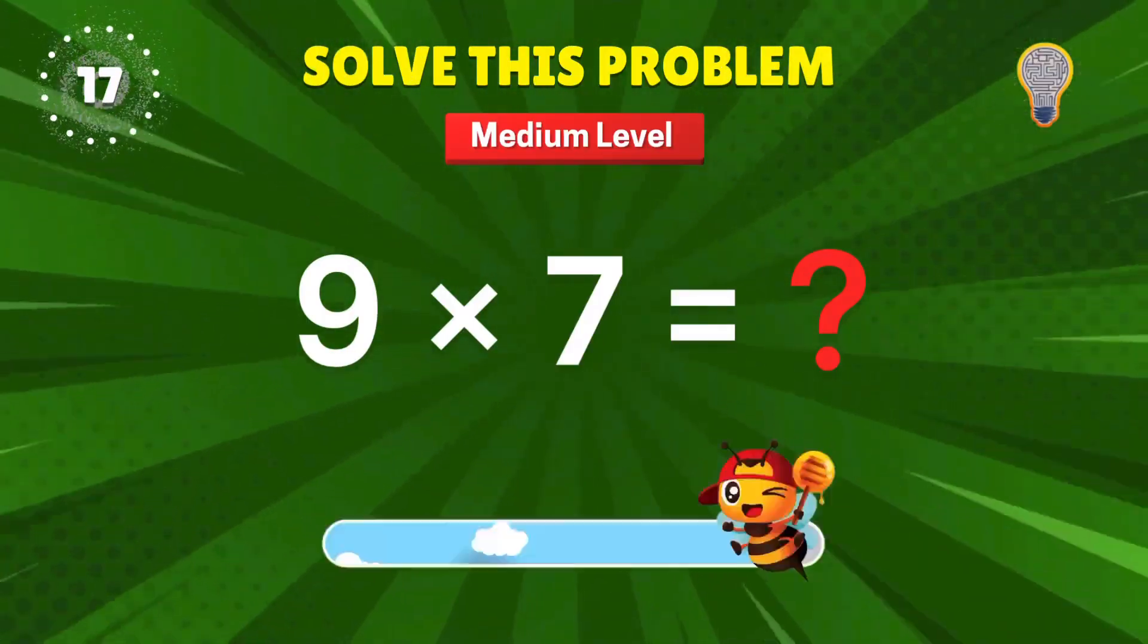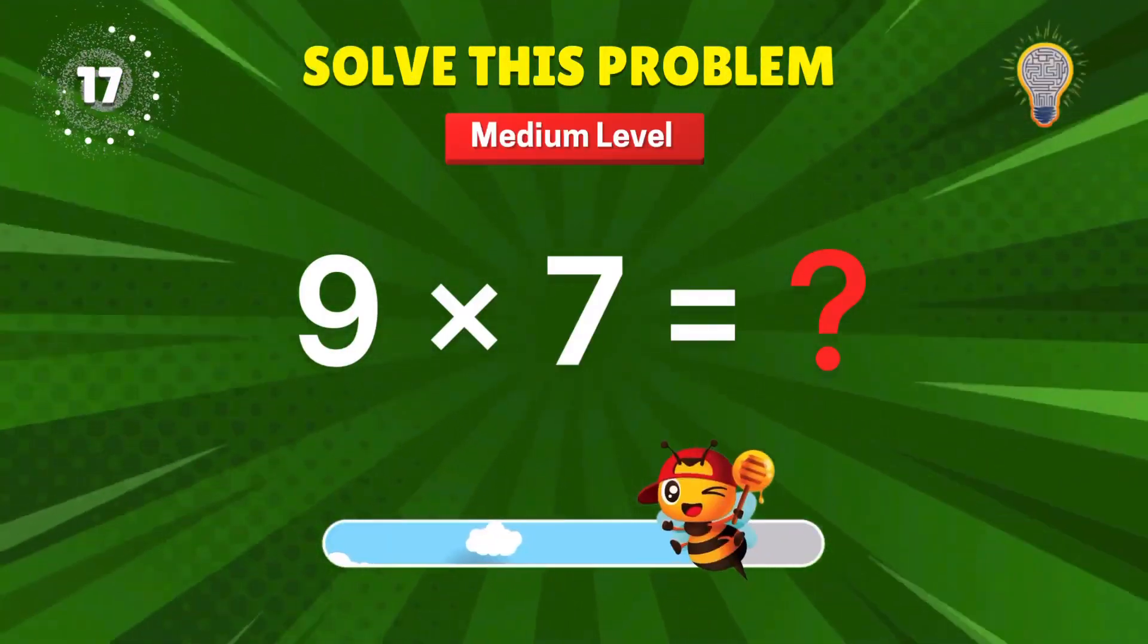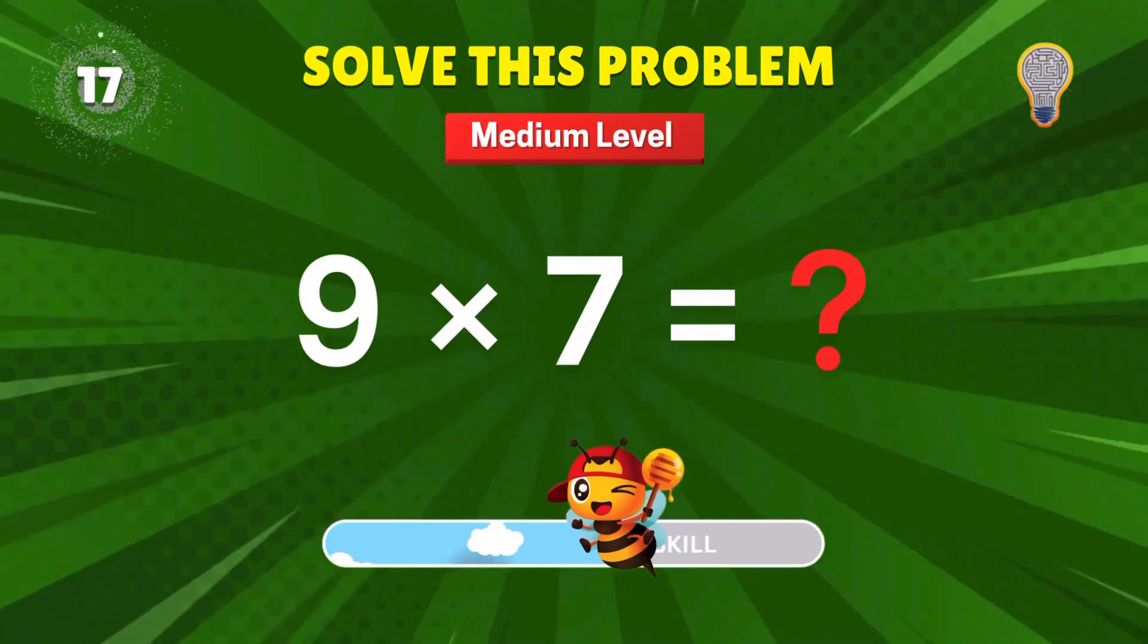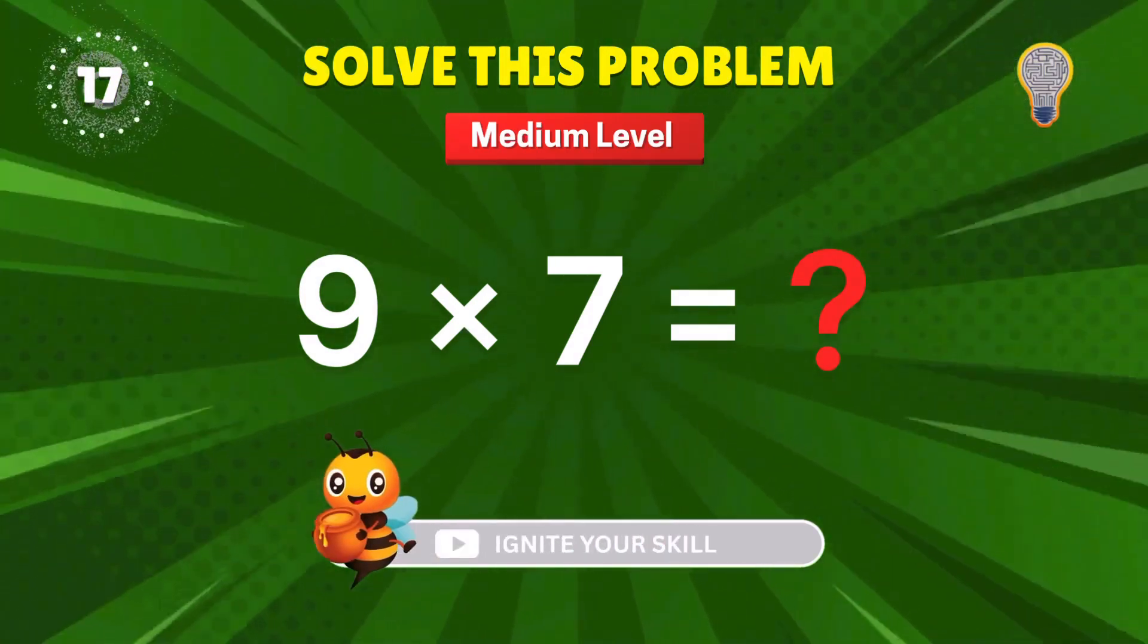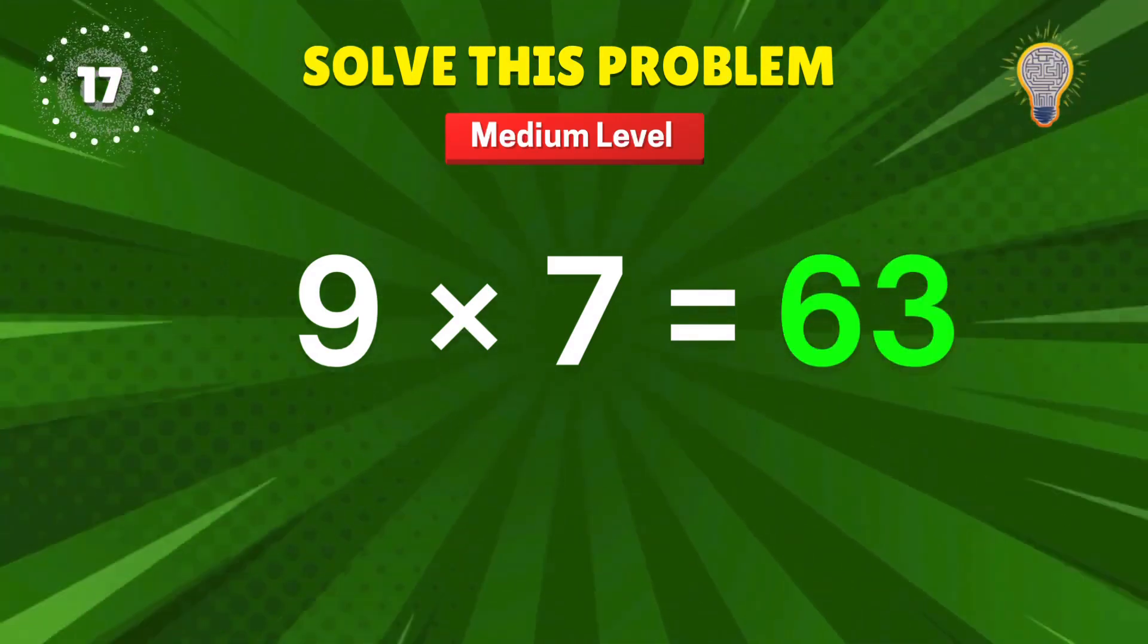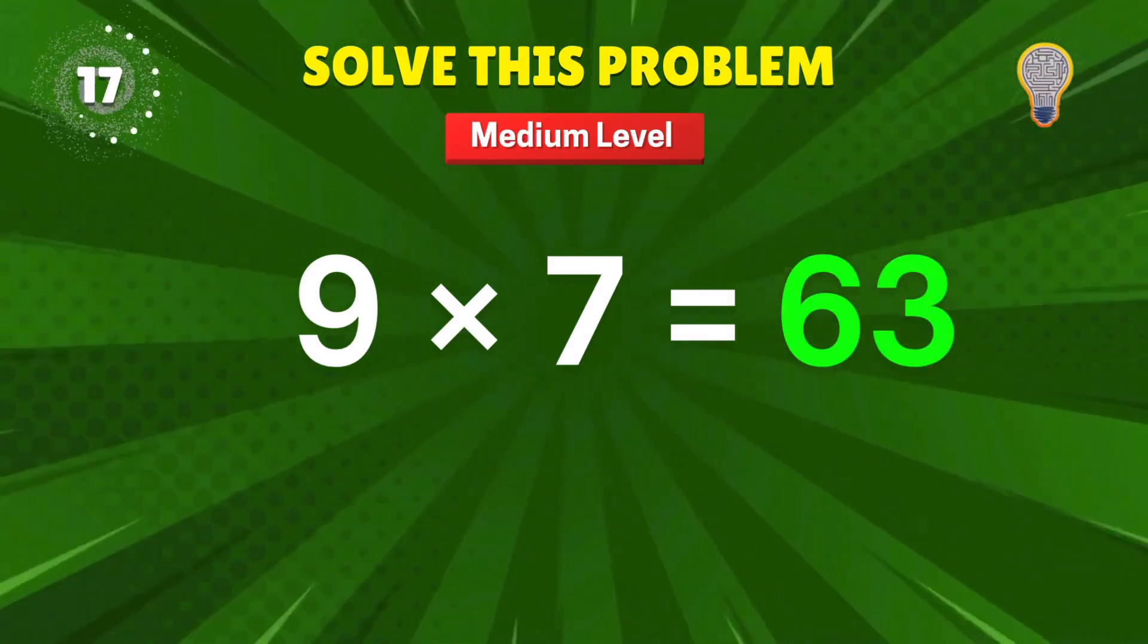9 times 7? Not just a table, it's multiplication magic. 63. Big brain move. Plus 1 to you.